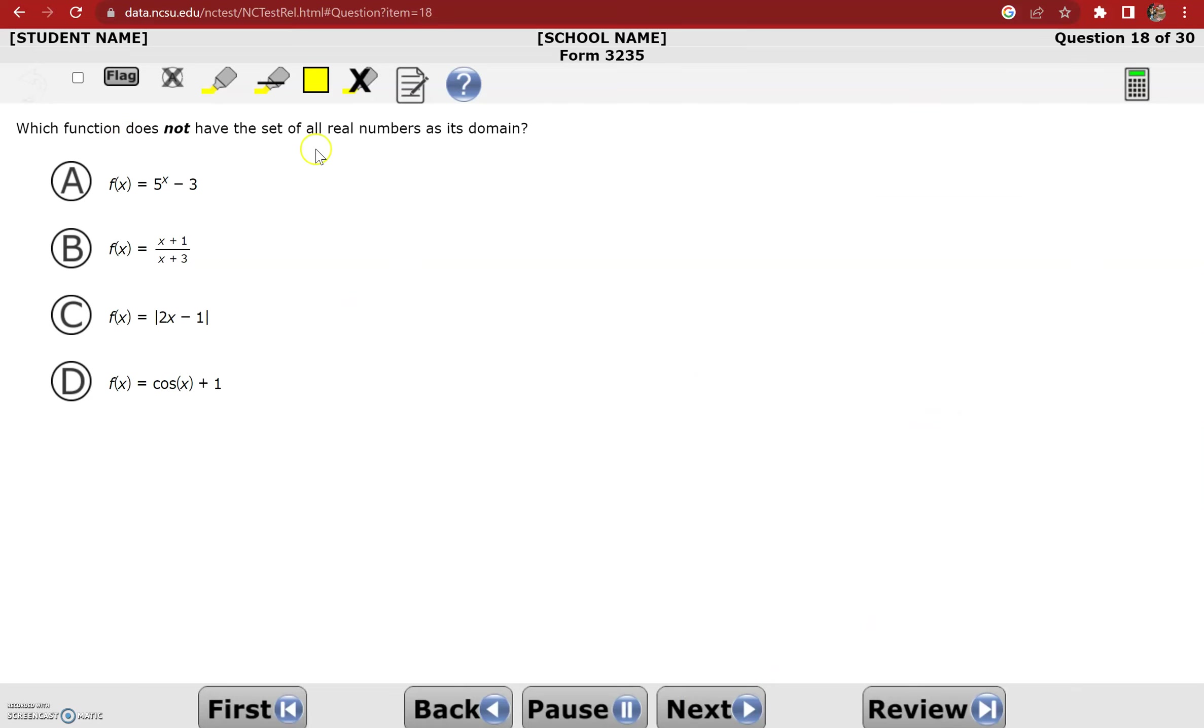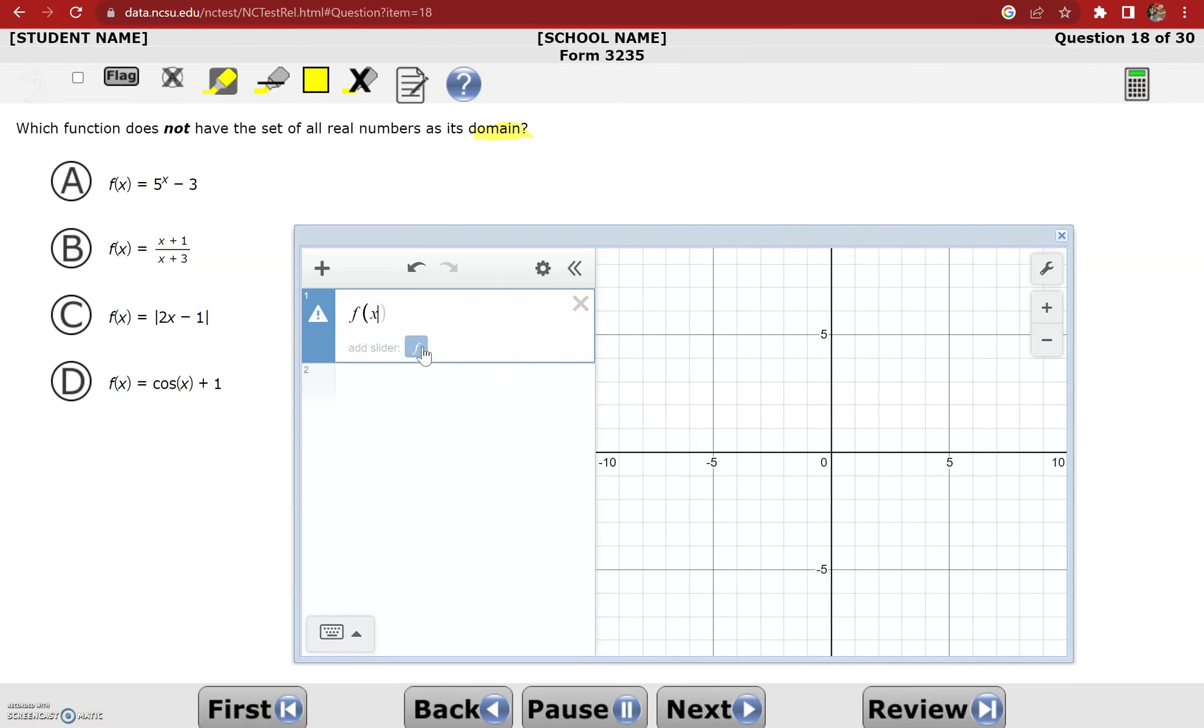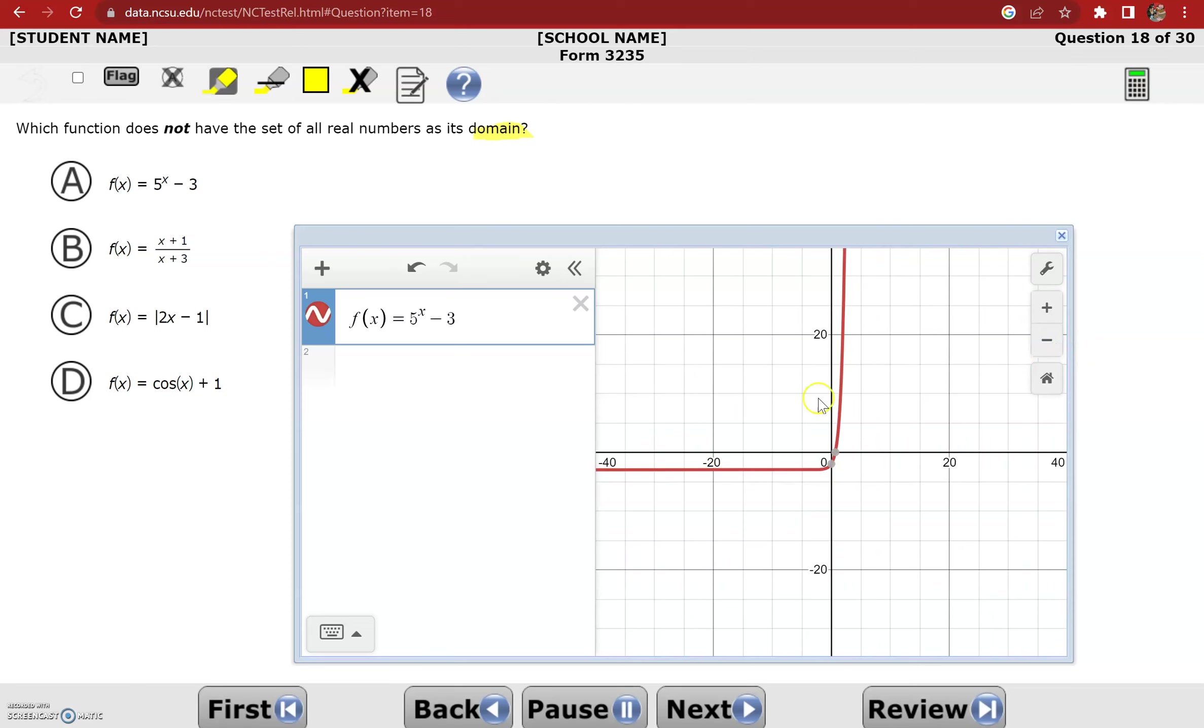Which function does not have the set of all real numbers as its domain? Again, we have to understand domain vocabulary term here, which is the set of all possible x values. So for something to not have all real numbers as its domain, it has to have a discontinuity on the graph or a gap in the graph. So I just need to graph each answer option. This first one, if I zoom out, it's a smooth continuous curve with no gaps, so that's not it. If I graph option B, x plus 1 divided by x plus 3, I can see that has a gap right here, a vertical asymptote, a discontinuity. If I was sketching this function with my pencil, I would have to pick my pencil up when I got to here to continue the curve in the bottom right part. So that is the one I'm looking for.